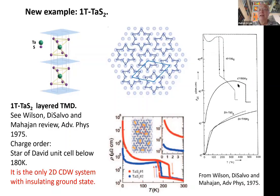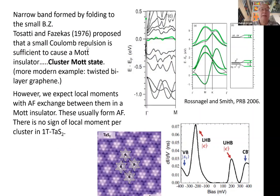This system is the only two-dimensional charge density wave system with an insulating ground state — the resistivity goes up. Everything else has resistivity going down, because in 2D, unlike 1D, you generally cannot gap the entire Fermi surface, so a piece always remains and the low-temperature state is a better metal. This was already understood by Tosatti and colleagues through band folding: the 13-site unit cell folds 13 bands, producing a narrow band — the granddaddy of the twisted bilayer graphene system.